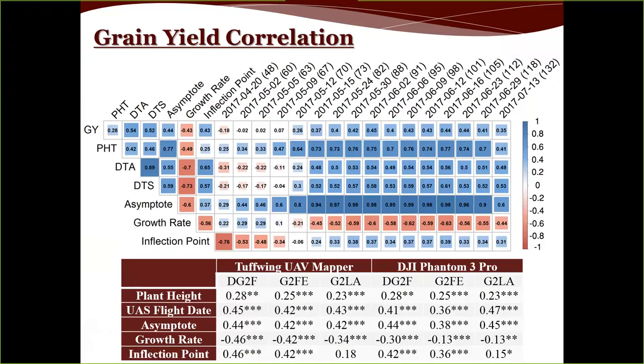Dr. Koch asks about the impact of weather conditions and wind speed on plant height measurements. Steven says this hasn't been investigated yet, but he's certain it's a factor — any small shift in leaves between pictures will affect mosaicing and key-point matching. The G2F dataset does have weather data attached, which could be useful for someone interested in exploring this relationship.